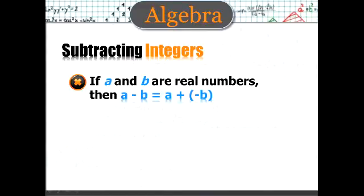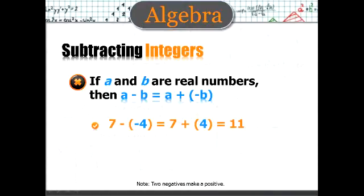Subtracting integers. If a and b are real numbers, then a minus b is the same thing as a plus negative b. And a lot of times it is helpful to go ahead and change the subtrahend into a negative number. Example 7 minus negative 4 is 7 plus 4, which equals 11. And remember that a negative and a negative is a positive.